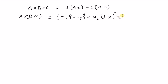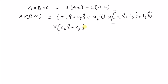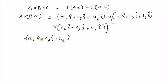So we write b as bx x-hat plus by y-hat plus bz z-hat, cross product with cx x-hat plus cy y-hat plus cz z-hat. This is written as ax times x-hat plus ay times y-hat plus az times z-hat, cross with the result of b cross c.